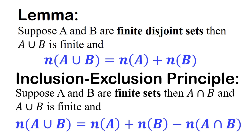Also remember the second one, which is called the inclusion and exclusion principle. This holds even if the two sets have an intersection. We are talking about the number of A union B when A and B are finite disjoint sets, and the number of A union B when A and B have something in common. So let's proceed now to those six questions, which I believe will help us develop problem solving skills.